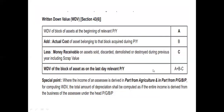The written-down value (WDV) is computed as: the WDV of the block at the beginning of the previous year, plus the actual cost of assets belonging to the block acquired during the previous year, less money received on assets sold, discarded, demolished or destroyed during the previous year.